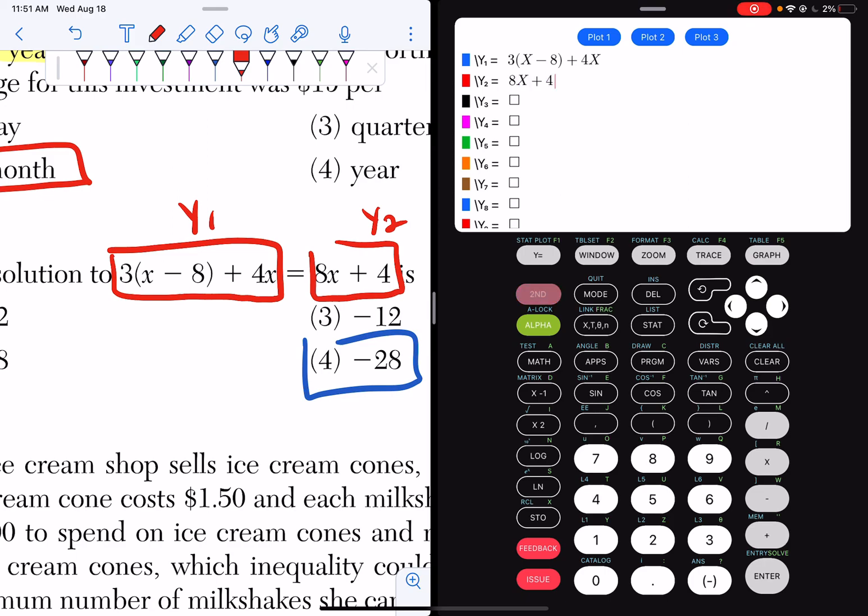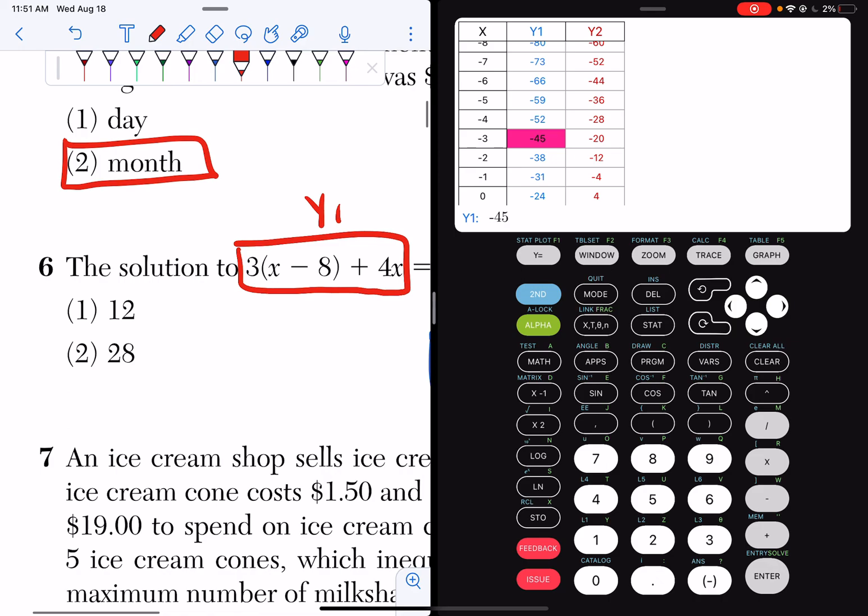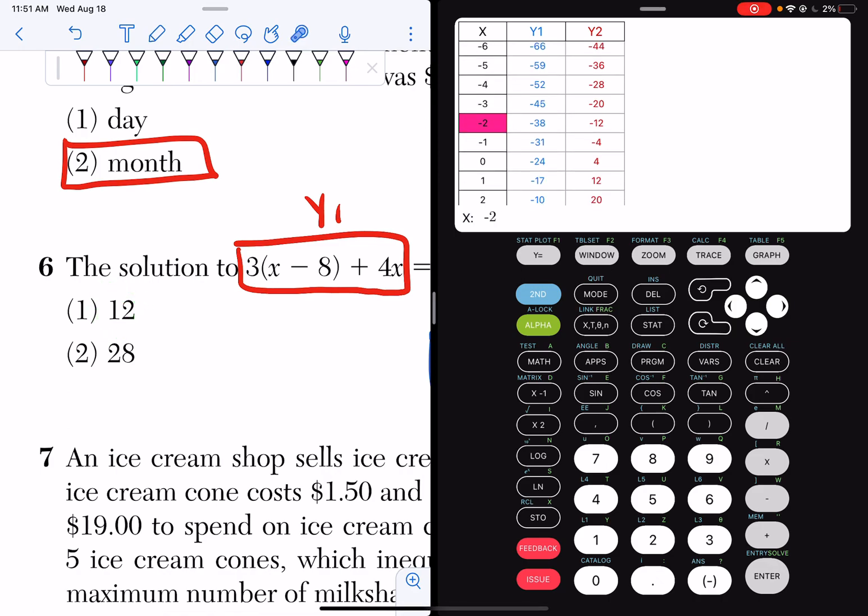I'm now going to hit second graph. And if I look, my first answer choice says go to x equals 12. So I'm going to go to x equals 12. And if I look at x equals 12, I get 60 and 100. That doesn't work.